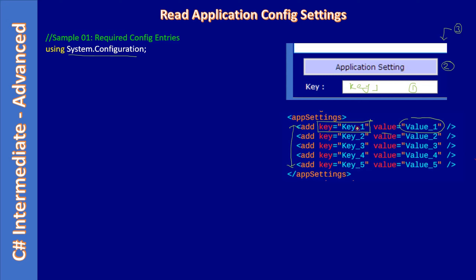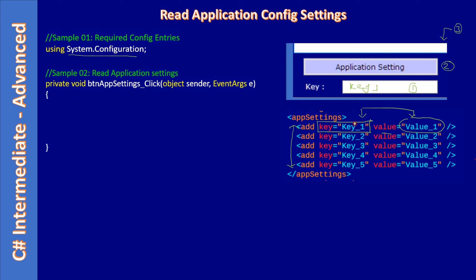The application will read the settings based on the key and behave accordingly. Even though this key-value pair is not deeply meaningful here, we are exploring how to read the application configuration file. It's good for exploration purposes for this sub-series.